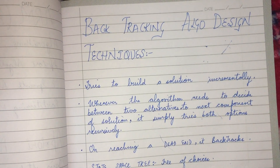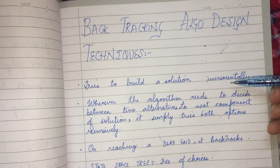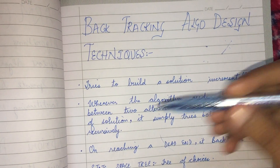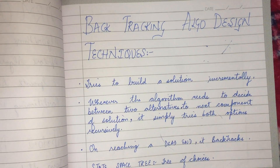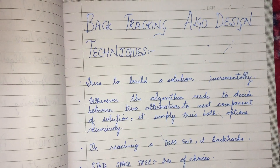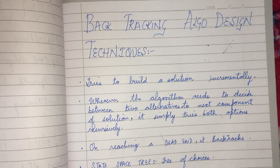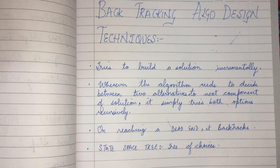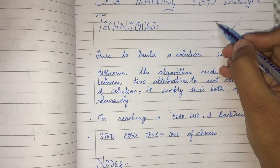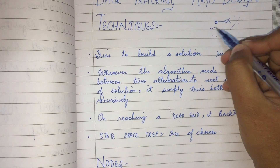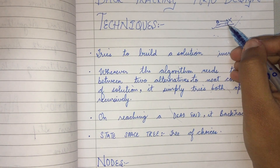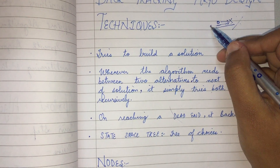Backtracking tries to build a solution incrementally. Whenever the algorithm needs to decide between two alternatives for the next component of the solution, it will not skip any option — it will recursively try both, since the answer could come from either one. A dead end means we have reached a point where going further will not lead to the destination, so we backtrack from there.